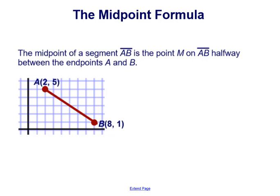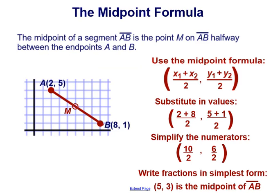Let's take a look at an example. The midpoint of segment AB is the point M on segment AB halfway between the endpoints A and B. We need to start with our endpoints and then find the average of the x-values and the y-values to find the midpoint using the midpoint formula. Our first point A is x1 and y1; our second point B is x2 and y2.